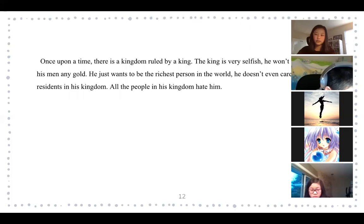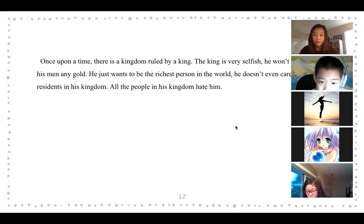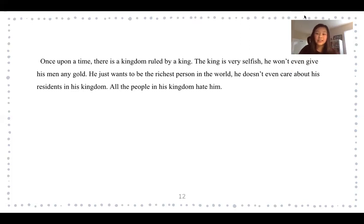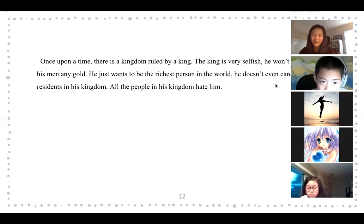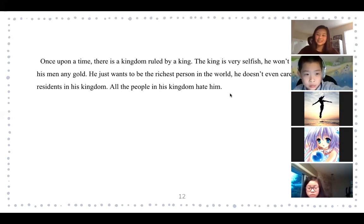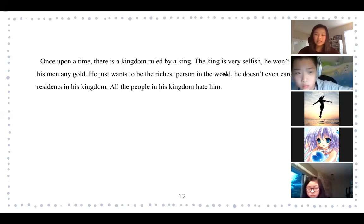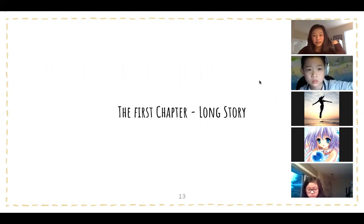Here's one more example, written by a student the first time I taught this class. His story was about a king, and his opening reads: 'Once upon a time there is a kingdom ruled by a king. The king is very selfish — he won't give his men any gold. He just wanted to be the richest person in the world. He doesn't really care about the residents in his kingdom, and all the citizens hate him.' Compared to my examples it has less detail, but that's acceptable for a short story since it doesn't need many details.